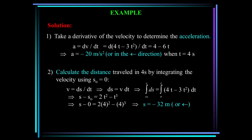Let's take the derivative of the velocity to determine the acceleration. a equals dv/dt. The derivative of the velocity is 4 - 6t. When t is 4 seconds, we plug 4 into this equation. We get 4 minus 24, or minus 20 meters per second squared. The negative sign indicates it's in the negative direction, or towards the left.